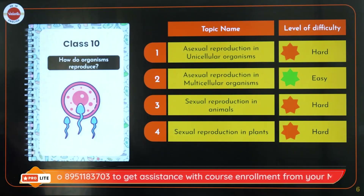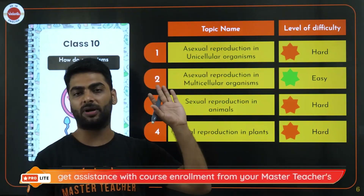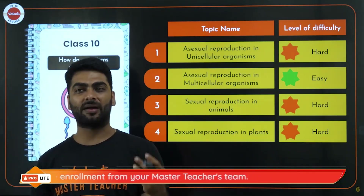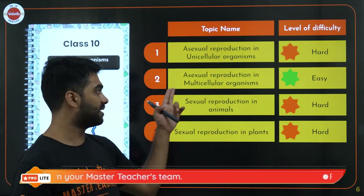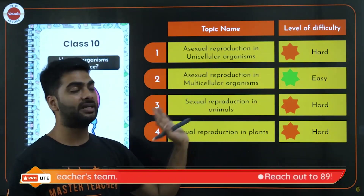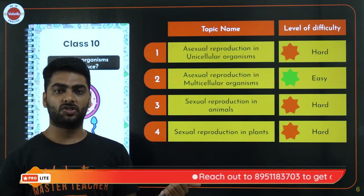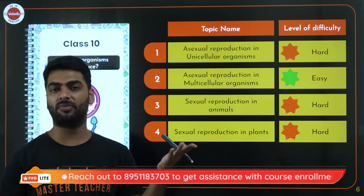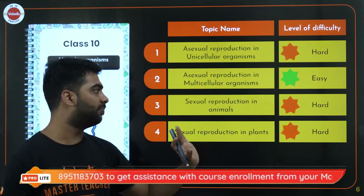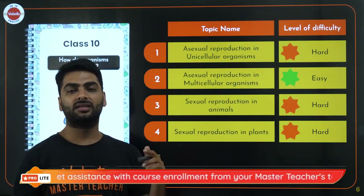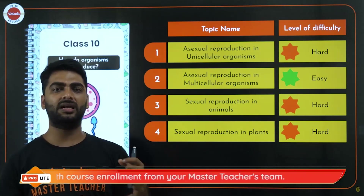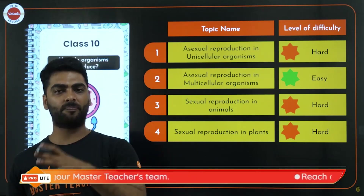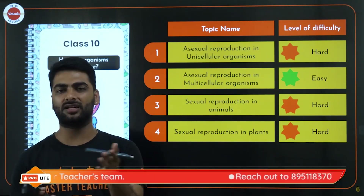The next topic is 'How do organisms reproduce?' We learn about asexual reproduction in unicellular organisms — binary fission, multiple fission, and fragmentation. Sexual reproduction in multicellular organisms includes budding in Hydra and vegetative propagation via leaf, stem, and root. Sexual reproduction in animals — the theoretical part can be a little difficult with terms, but once you understand the process of gametogenesis it becomes quite easy.